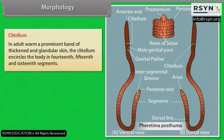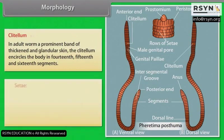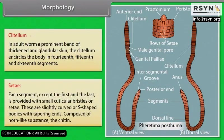Clitellum: In an adult worm, a prominent band of thickened and glandular skin — the clitellum — encircles the body in the 14th, 15th and 16th segments. Each segment except the first and the last is provided with small cuticular bristles or setae. These are slightly curved or S-shaped bodies with tapering ends, composed of chitin.